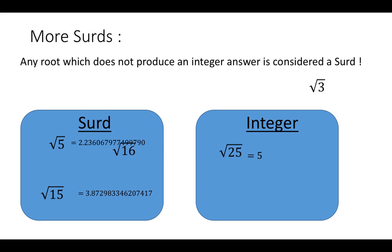Root 16, however, gives us a nice integer value of 4. And lastly, root 3, when we work that out, once again, it's going to give us a large decimal number.